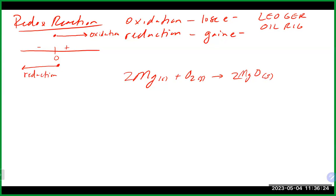Looking at the reaction Mg + O₂ → MgO, we can assign oxidation states. Anything in its standard state, not combined with anything else, has an oxidation state of zero. When magnesium and oxygen form an ionic compound, the oxidation state equals the ionic charge: Mg is +2 and O is −2. Magnesium started at zero and ended at +2 — moving in the positive direction — so it's going through oxidation. Oxygen started at zero and ended at −2, moving negative, so it's going through reduction.